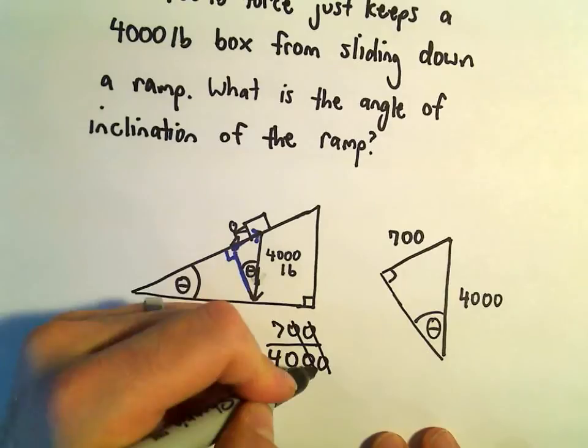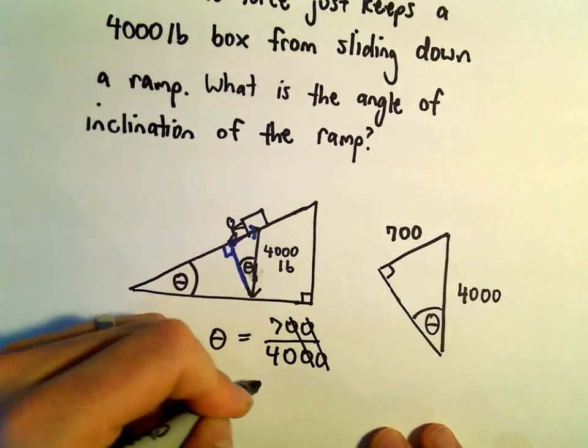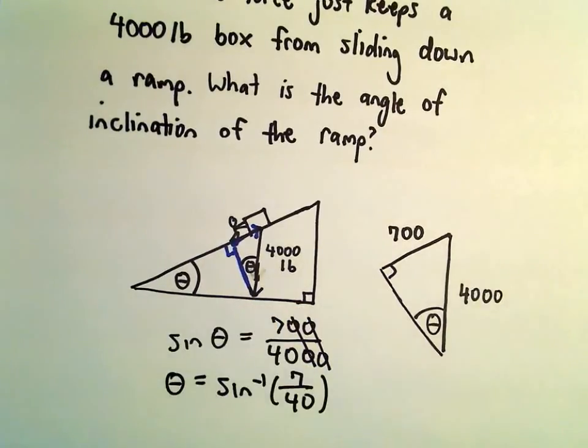So we can cancel out some zeros here. And all I'm going to do is take arc sine of both sides. So we'll take arc sine of 7 over 40, and that's all we have to do in this case.